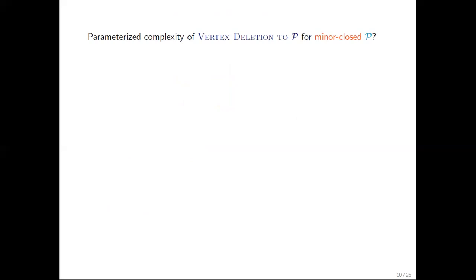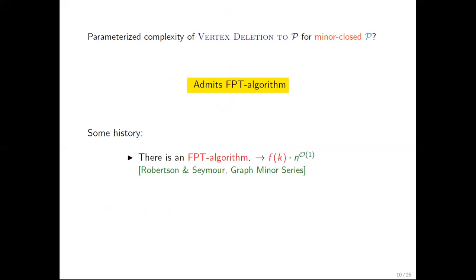In this case, the answer is yes, the problem admits a fixed-parameter-tractable algorithm. This result has some history behind it. It dates back to the seminal work on graph minors of Robertson and Seymour. The existence of an FPT algorithm solving this problem is a non-constructive consequence of graph minors. The constructability of the function f in the parametric dependence of k was proven later by Adler, Grohe, and Kreutzer, but they didn't provide any bounds on this function.